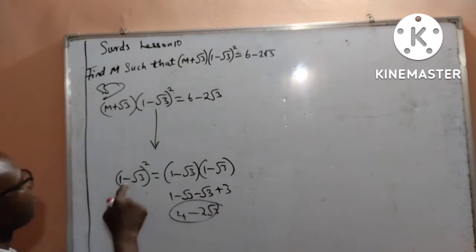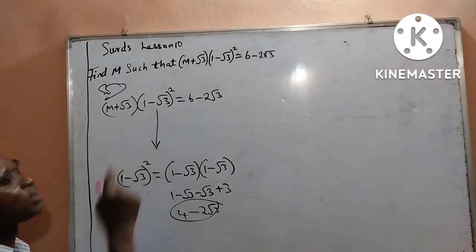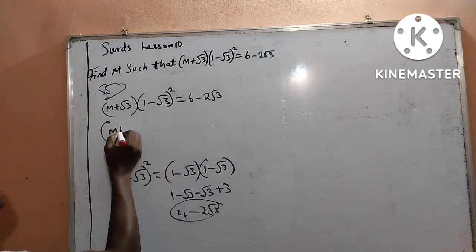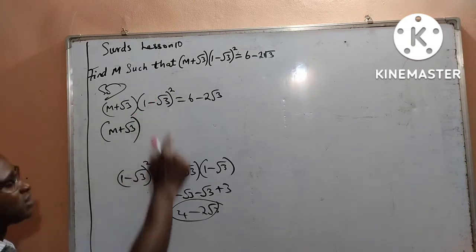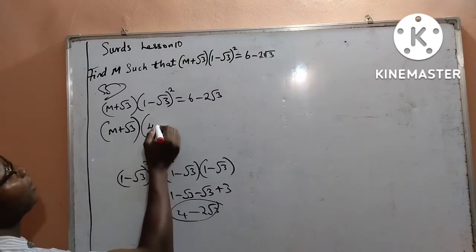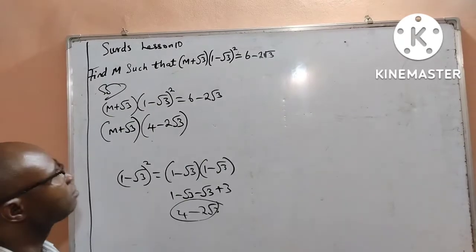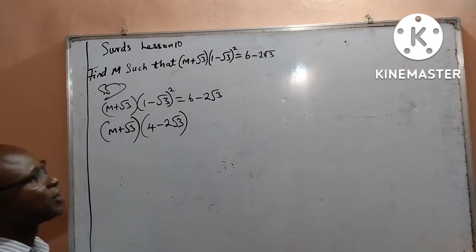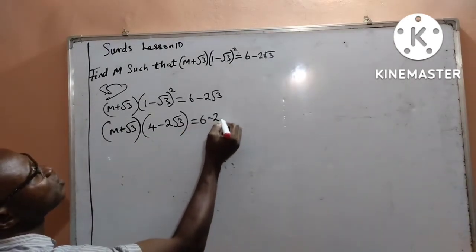This is the result from working on 1 minus root 3 raised to power 2. I am going to use it to replace this place. So in the question, m plus root 3 into — I now write 4 minus 2 root 3. I have replaced 1 minus root 3 raised to power 2 with 4 minus 2 root 3. So it is now equal to 6 minus 2 root 3.